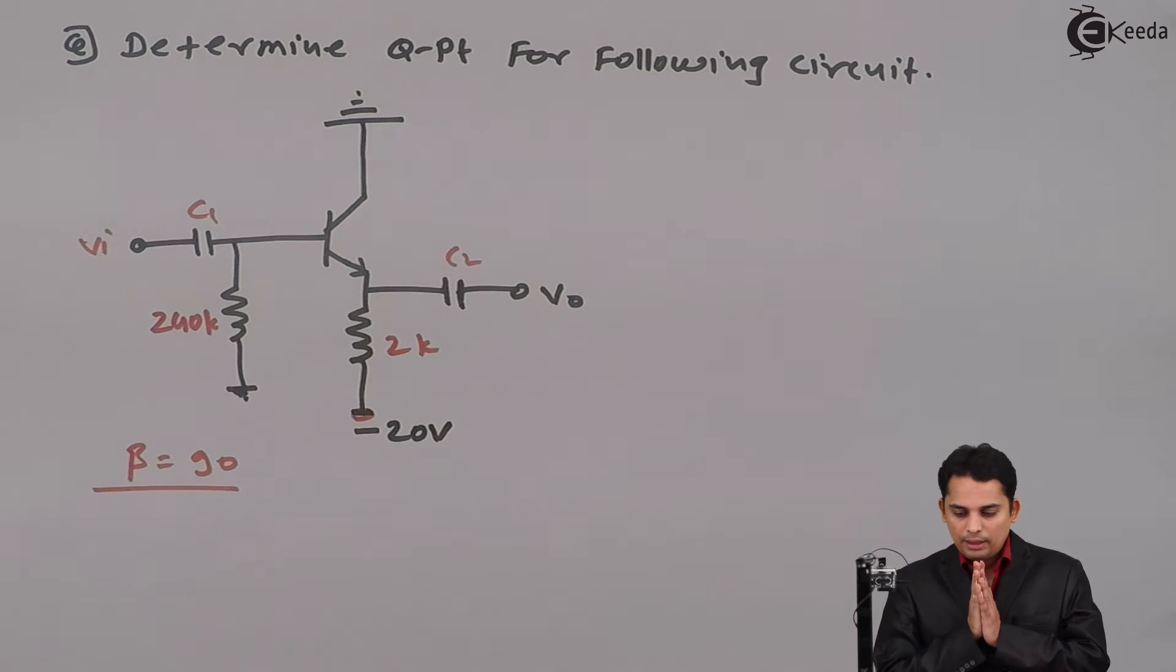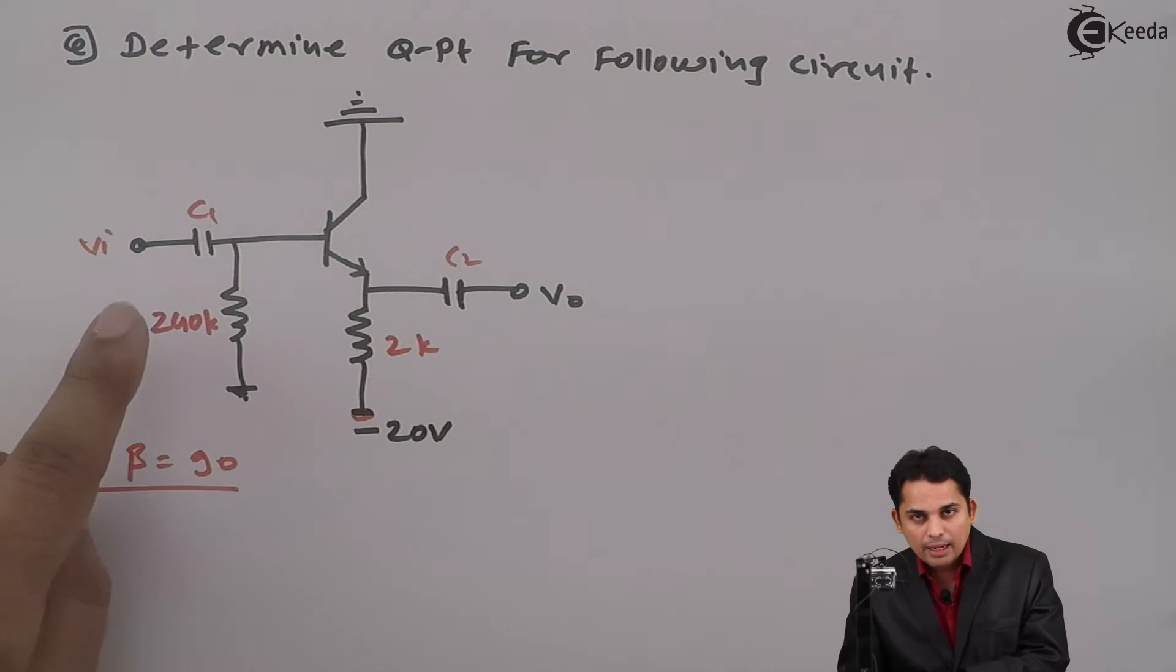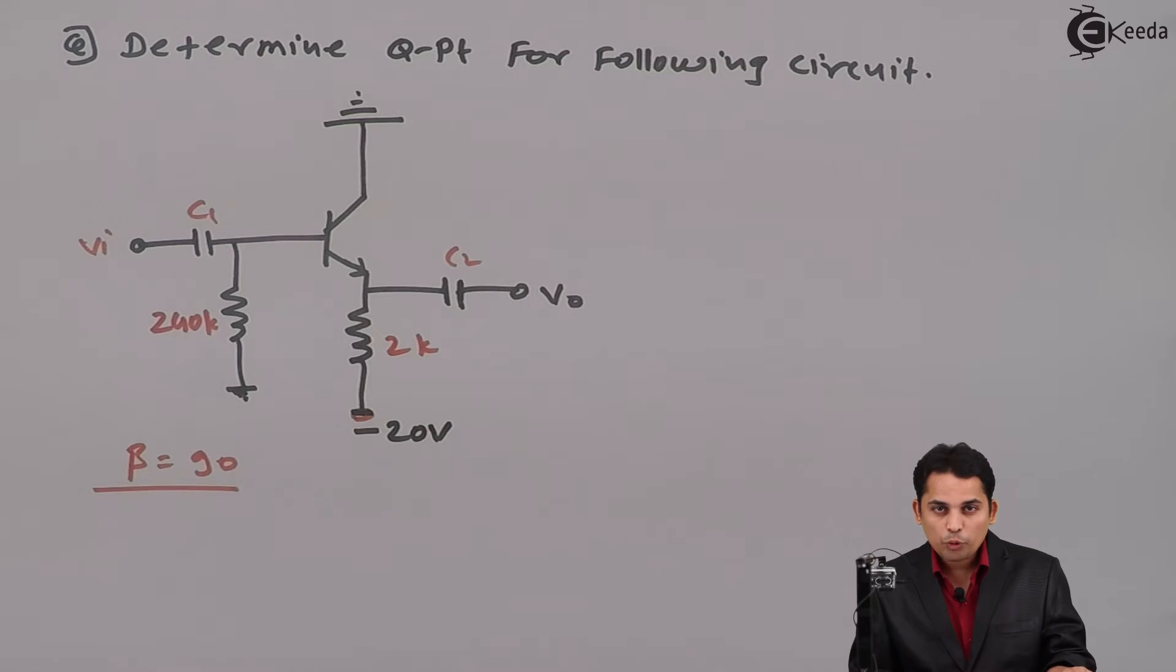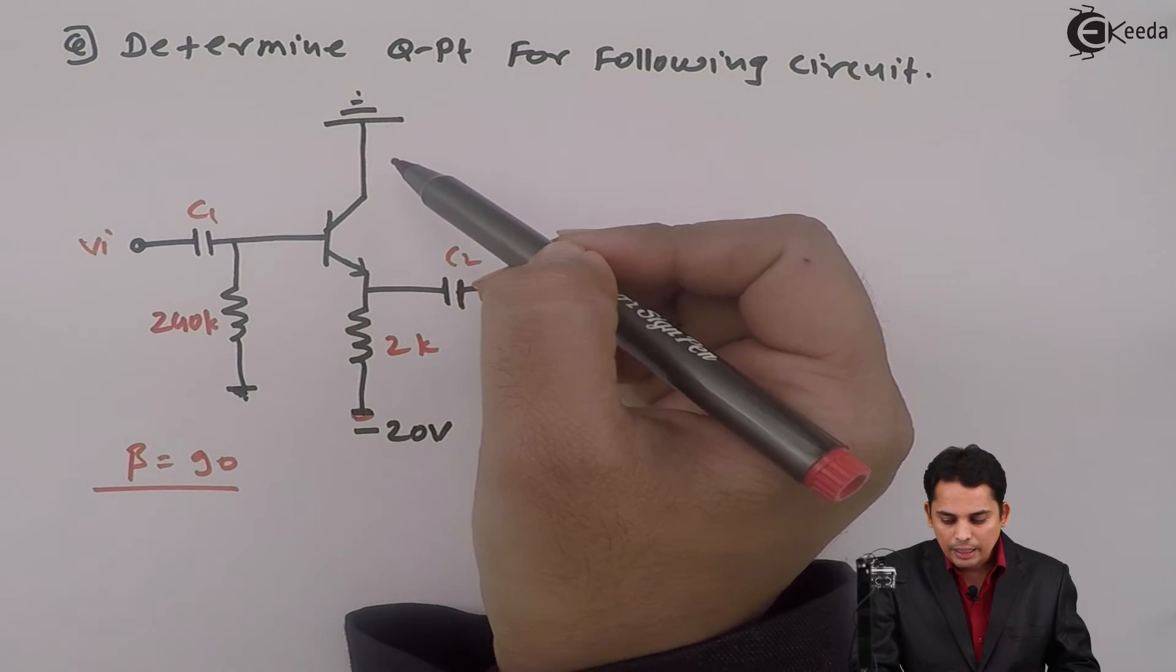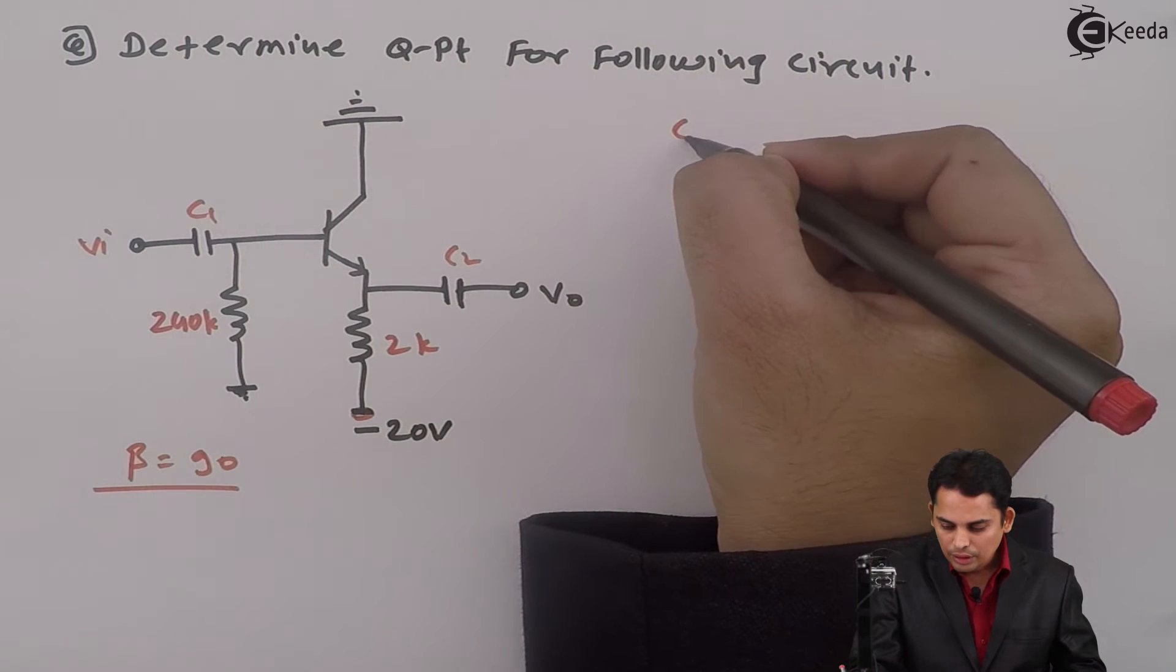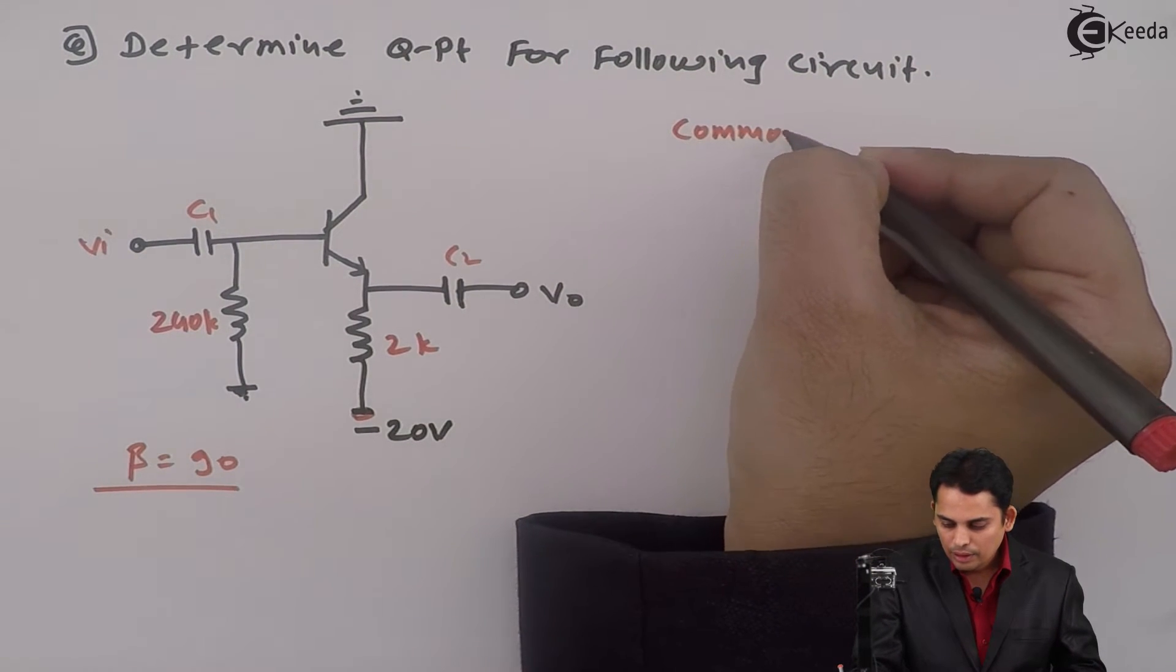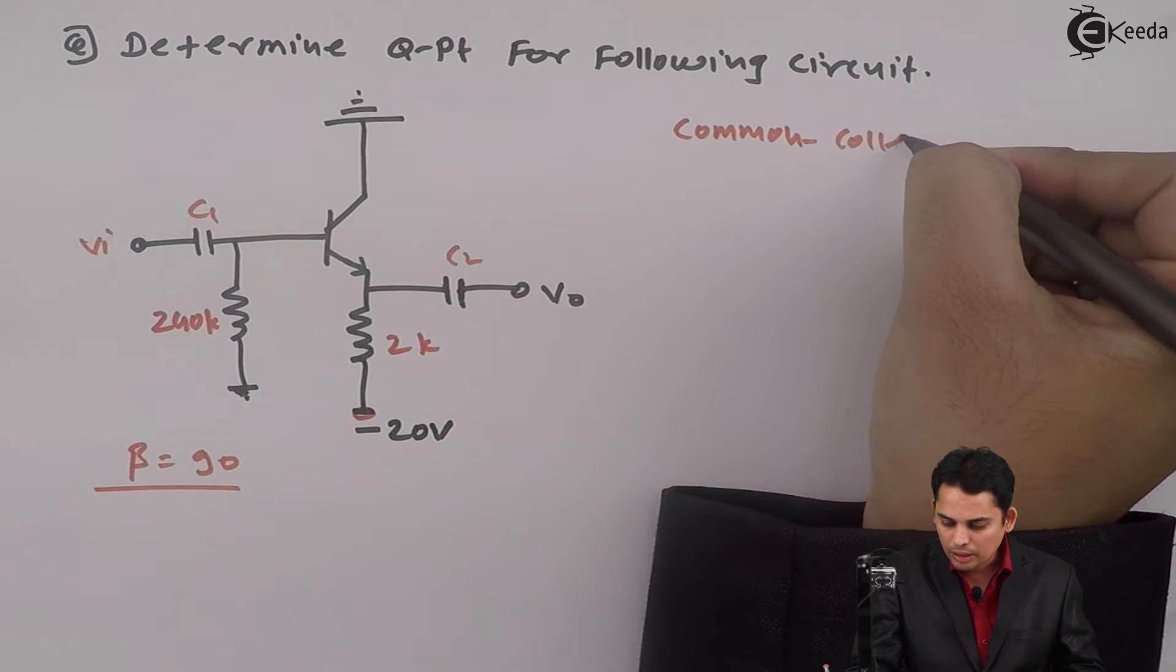I will repeat that. The input is applied at the base whereas output is taken at the emitter whereas collector is common and hence this is common collector circuit.